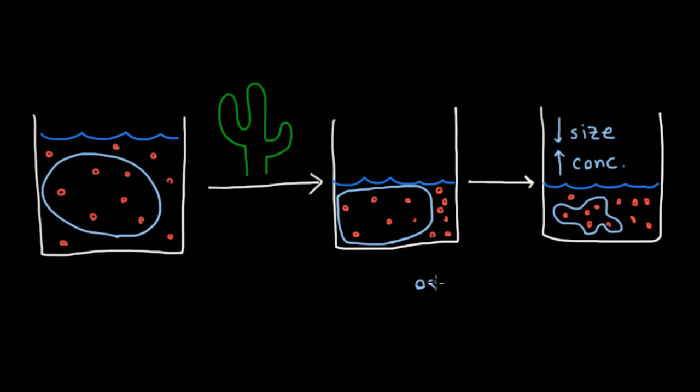They're called osmoreceptors. So they can see when their concentration is changing, and actually what they're seeing is the change in size, but as we see, these two things, concentration and size, really go hand in hand.